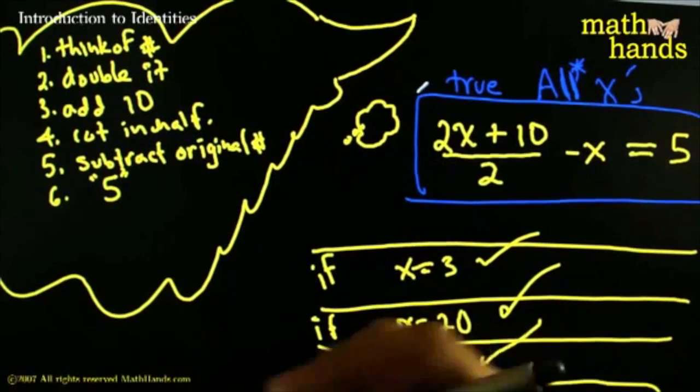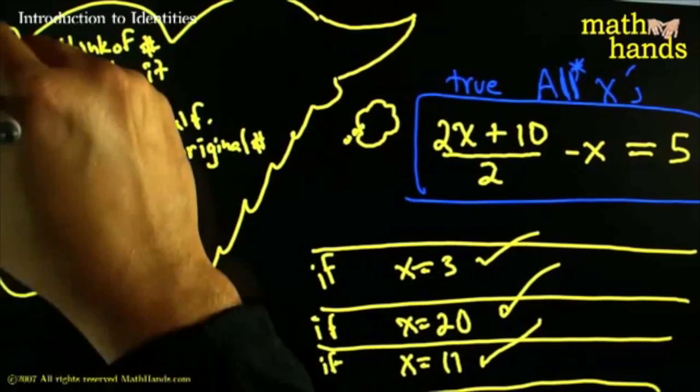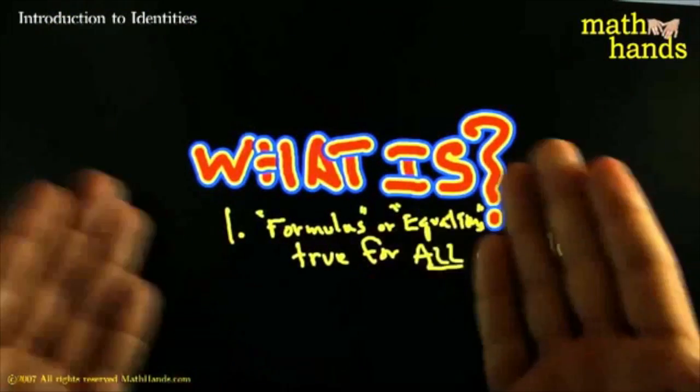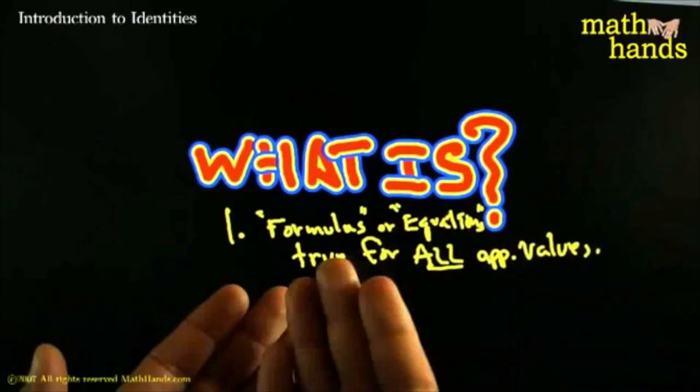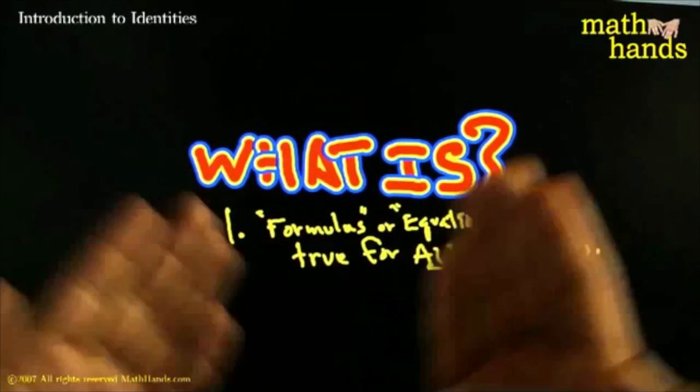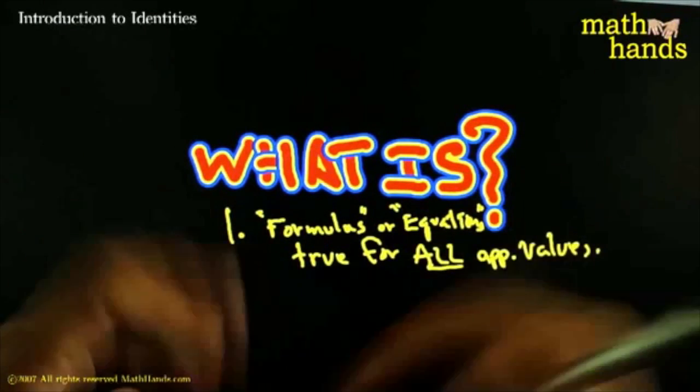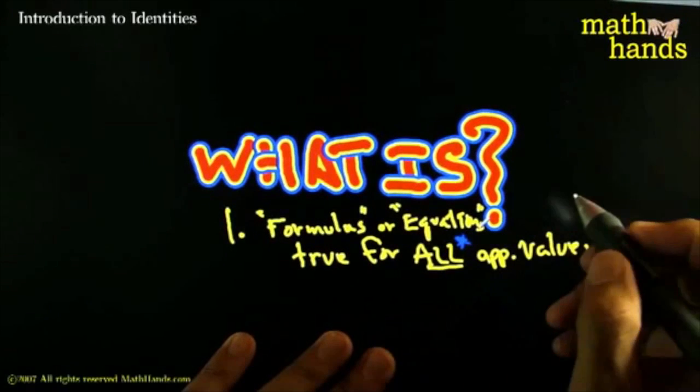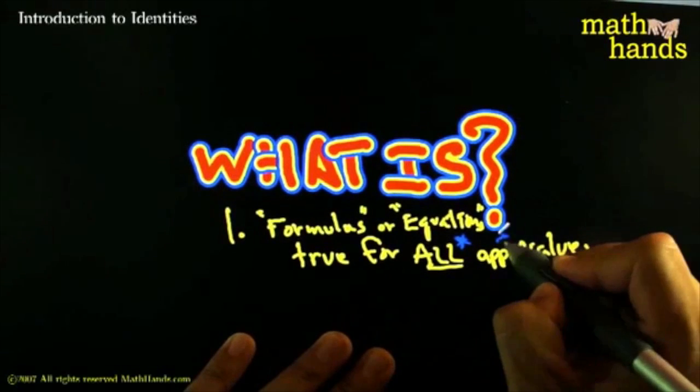If it does, then that's what we call an identity. That's the first characterization of an identity. When somebody stops you and says, hey, can you explain to me what is? What is an identity? One way to characterize it is to say, hey, an identity is a formula or an equation that's true for all possible values of x. That's all possible values of the, all applicable values of the variables.